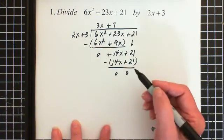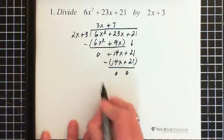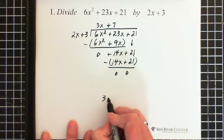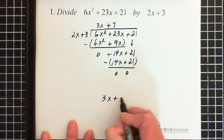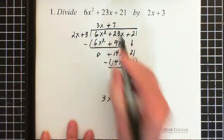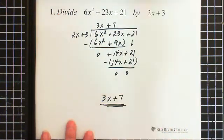So that gives us 0. And that means we are finished. So the answer to this question then is 3x plus 7. And this piece is called the quotient. Okay?